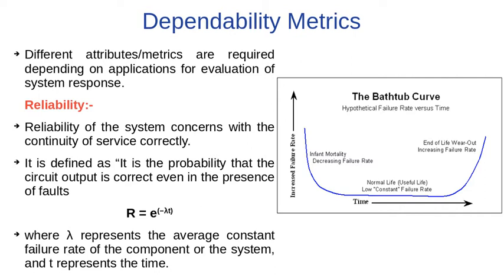This phase is when the product is in the user's hands. After some time, another phase starts which is called the end of life, wear-out effect, or aging effect. Due to this, the product starts malfunctioning and the user needs to replace it. This normal useful life should be as long as possible to maintain the credibility of the product.